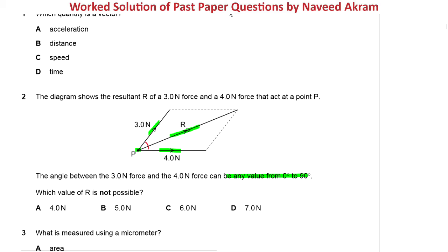Let us take the angle 0 degree. What will happen if the angle between these two forces is 0 degree? There will be a force of 3 Newton and another force of 4 Newton. Two forces are acting in the same direction. So, the resultant will be 3 plus 4 is equal to 7 Newton. So, 7 Newton will be the maximum value of the resultant vector.